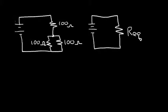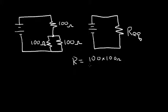Let's do a sample problem involving series and parallel resistors. The circuit on the left has two 100 ohm resistors that are in parallel, and they're in series with another 100 ohm resistor. We want to find REQ — the equivalent resistor that would replace these three 100 ohm resistors. Let's first find the equivalent resistance of this parallel combination. We know the equivalent resistance is a product over the sum, so it's 100 ohms times 100 ohms divided by the sum, which is 200 ohms.